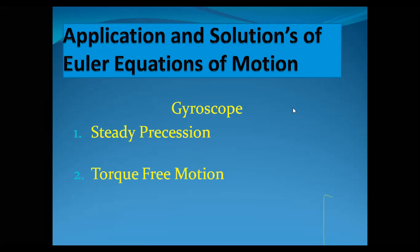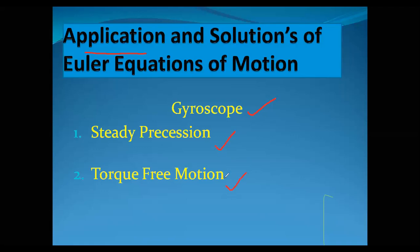The application of the Euler equation of motion is the understanding of the motion of the gyroscope. The solutions of the Euler equations of motion are the solutions of the gyroscopic equations — that is, steady precession motion and torque-free motion. So we can say that the gyroscope is the application of the Euler equation of motion, and steady precession and torque-free motion are the solutions.